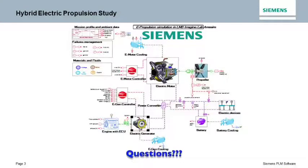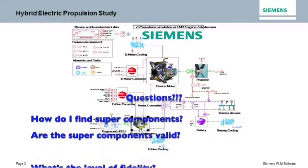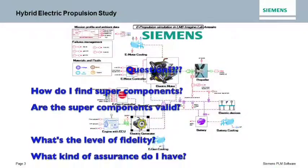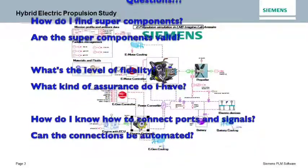At this point, you may have questions like: How does a user find super components? How do you know the super component is valid? What level of fidelity is the super component? What kind of assurance can I expect?